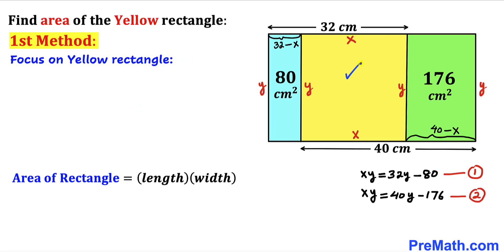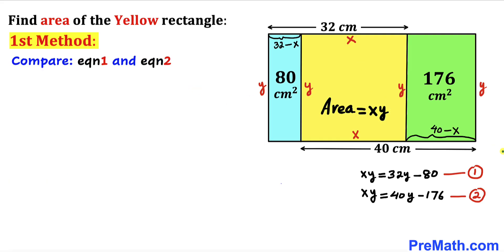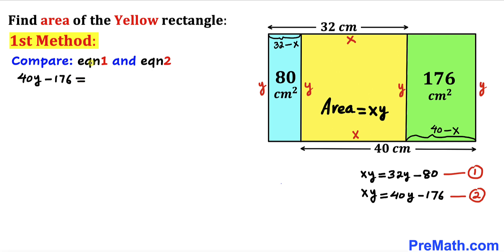Let's focus on the yellow rectangle, whose side lengths are x and y. The area of this yellow rectangle is simply length times width, which is x times y. So our task is to find the value of x times y to get the area of the yellow rectangle. Let's compare Equations 1 and 2. The left-hand sides are the same, so we can equate the right-hand sides: 40y minus 176 equals 32y minus 80.